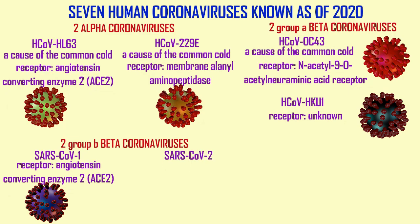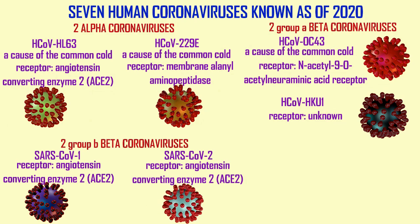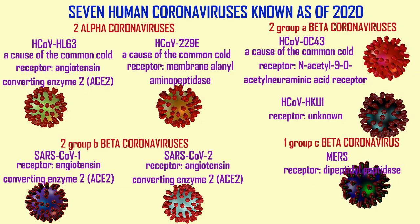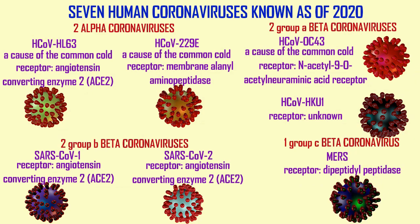The two group B beta coronaviruses are SARS coronaviruses 1 and 2, which both use ACE2 as a receptor. The single coronavirus classified in group C beta coronaviruses is the Middle Eastern Respiratory Syndrome, MERS, which uses the receptor dipeptidyl peptidase.